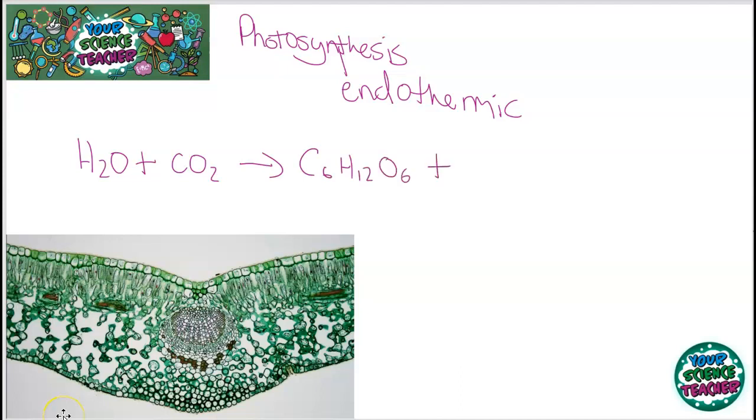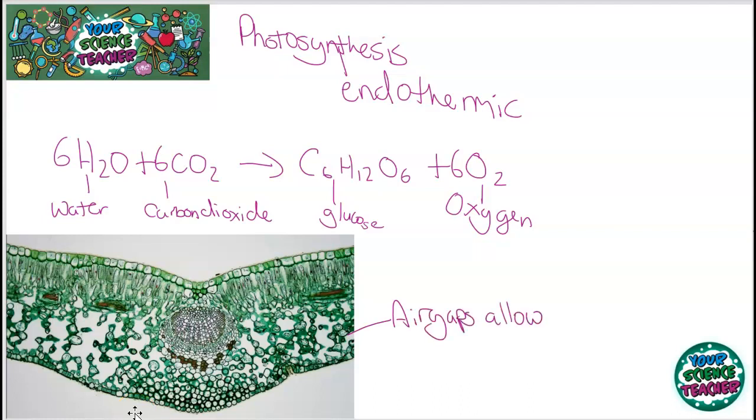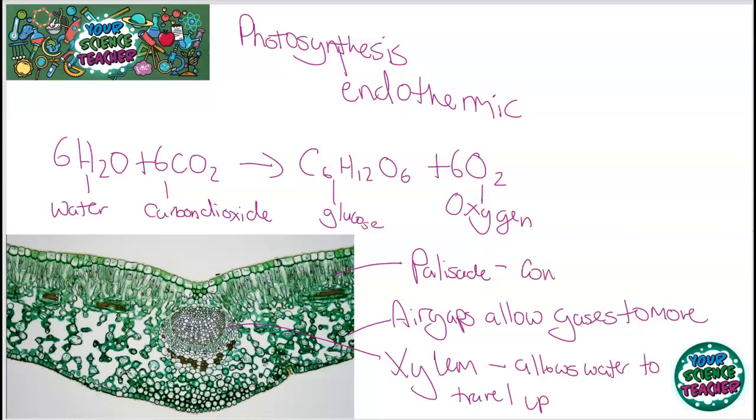Leaves are perfectly adapted for photosynthesis to occur, and here we have a cross-section view of a leaf. The leaf is full of air gaps, and that's important because the air gaps allow gases to move in between the leaf with ease. Also, there are xylem, which allows water to travel up to the leaves. And here there's the palisade layer, and the palisade mesophyll layer contains lots of chloroplasts, and this is the site of photosynthesis.